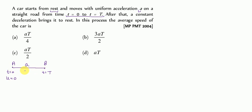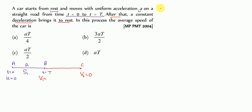After that, a constant deceleration brings the car to rest. So from point B to point C, the final velocity V2 is 0, because the car comes to rest at C. We need to find the average speed in this entire process. The average speed formula is total distance divided by total time.